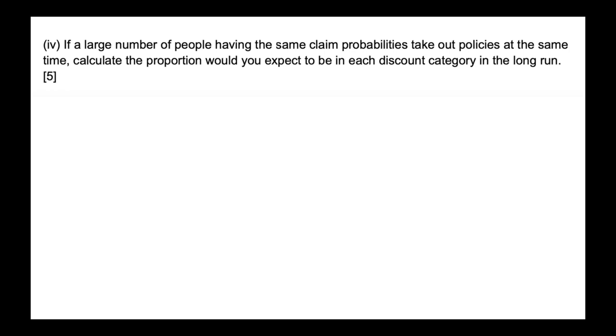Coming up to the final part of the question, it says, if a large number of people having the same claim probabilities take up policies at the same time, calculate the proportion you would expect to be in each discount category in the long run. So once again, we need to rely on our theory and the theory in this instance is that we need to find the stationary distribution. This is how does it stabilize in the long run?